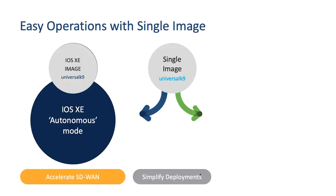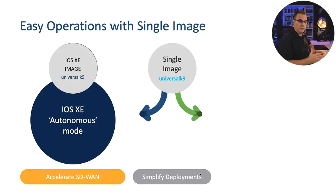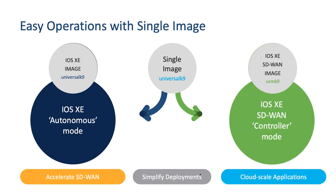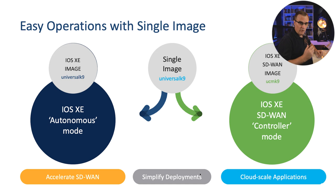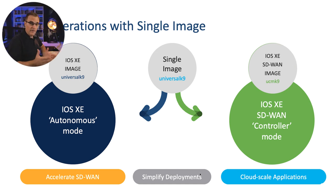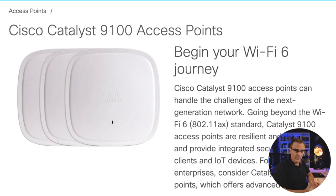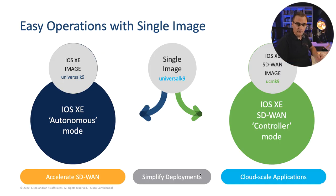Same operating system — IOS XE — but you can configure it in two modes. It can either run in autonomous mode, running by itself similar to an autonomous access point, or you can run it in SD-WAN mode, where a controller is controlling the IOS XE device. In the old days we had autonomous access points, and now an access point can be configured as autonomous or lightweight. Now these edge platform devices can also run in autonomous mode or in controller mode — SD-WAN mode.